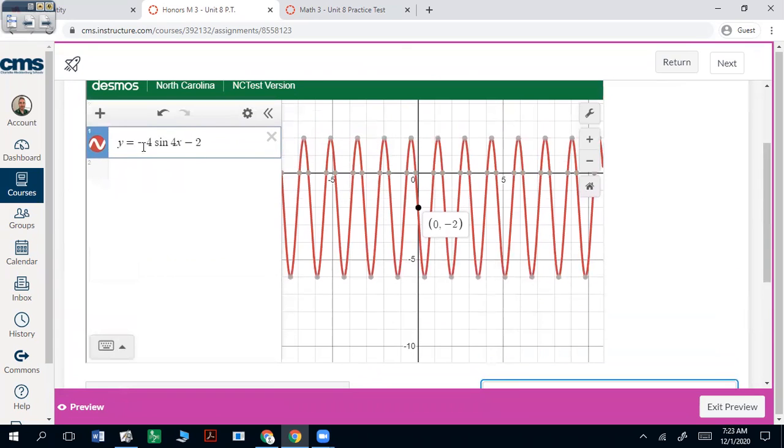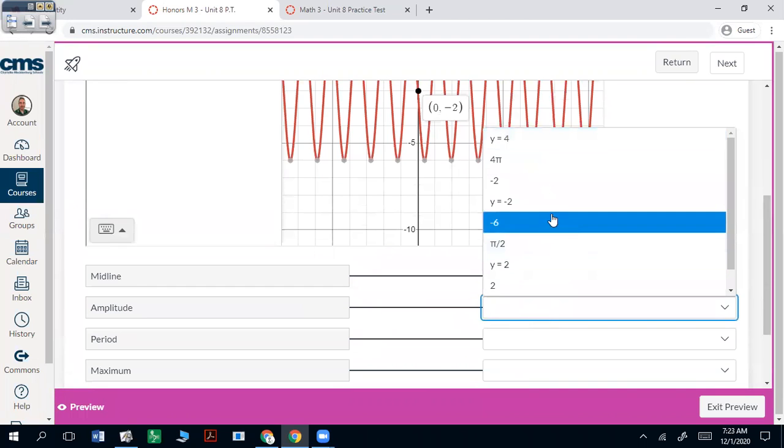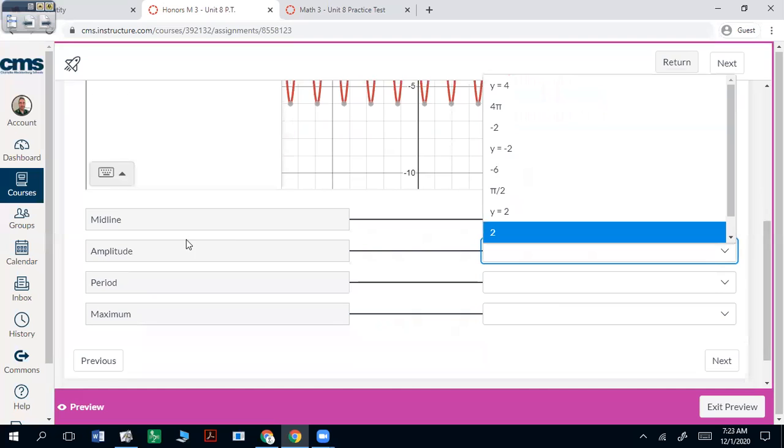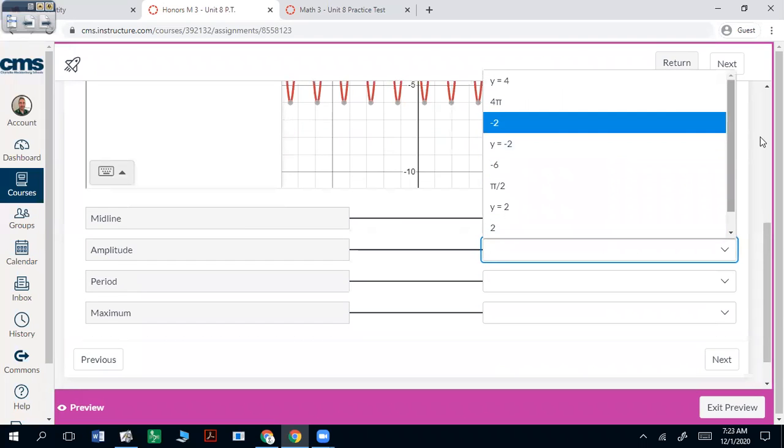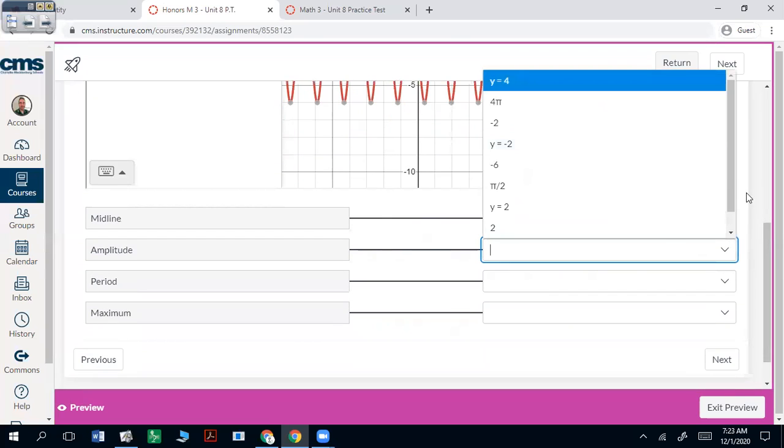Amplitude should be 4. Ignore the negatives. So, there it is.